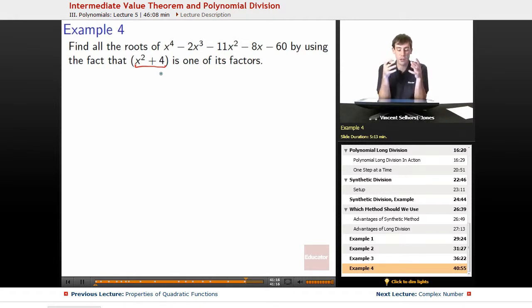So we want to factor this larger thing so we know that we can pull out x squared plus 4. So if we're going to pull it out, can we use synthetic division? No, because it's not in the form x minus k. We've got this x squared. So we've got to use polynomial long division.